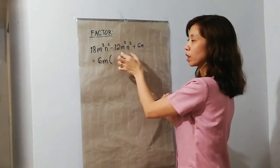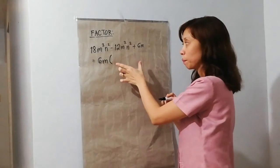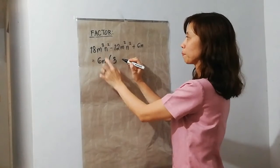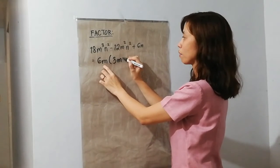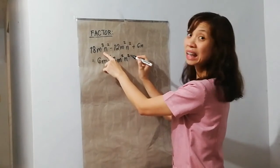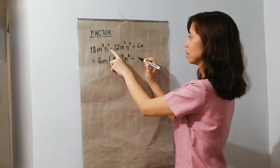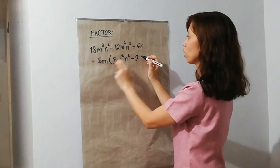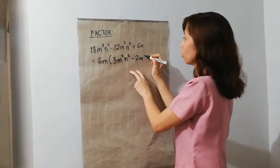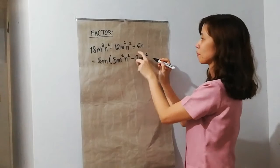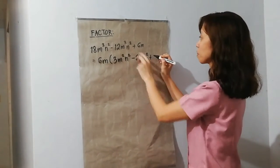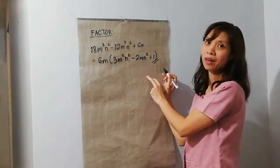So, ito na yung common factor nyan. Divide na natin. We have 3 terms, so dapat 3 terms din sa loob ng parentheses. So, we have 18 divided by 6 is 3. M cubed divided by M, we have M squared. And then since walang N dito sa common factor, kopihin na lang natin. This is minus sign. So, 12 divided by 6 is 2. M squared divided by M is M. Since wala ulit N dito, kopihin na lang ulit natin. Next, we have 6M divided by 6M. So, this is plus 1.